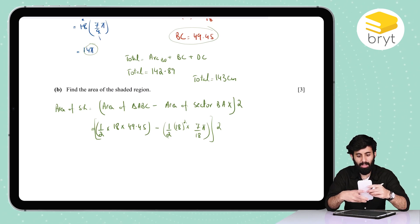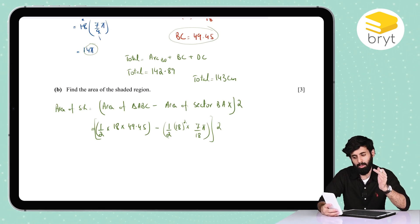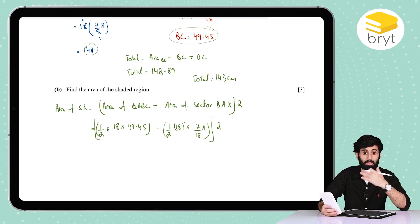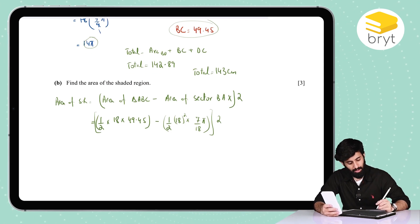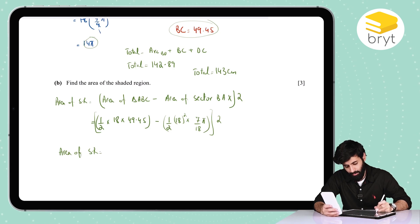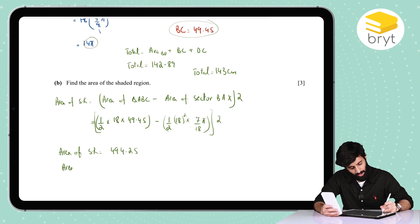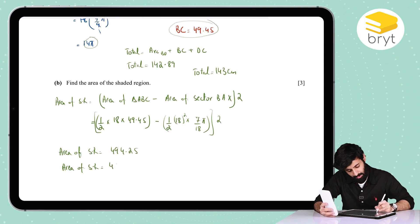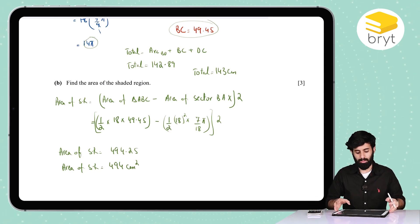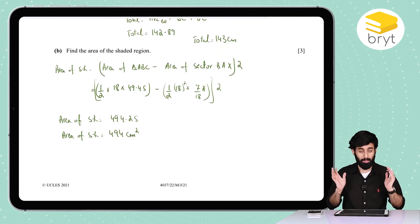Now I have the area of half of the shaded region. So I'm looking at 247 point something. If I want the area of the entire thing, I'll just multiply this answer by two. Now I'm looking at the area of the shaded region, which turns out to be 494.25. And as per the rule, we have to give an answer correct to three significant figures. So this is either going to be 494 or 495. Since it's closer to 494, it's going to be 494 centimeter squared. And there you go. That's your final answer. And with this, we are done with this question also.